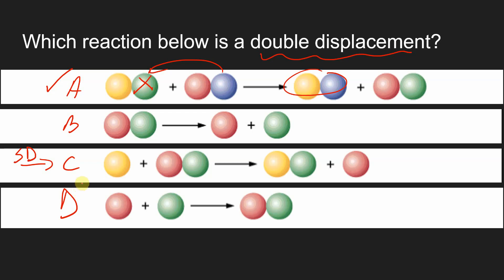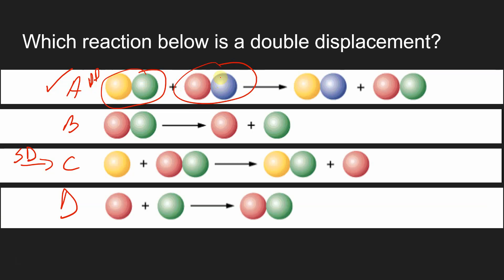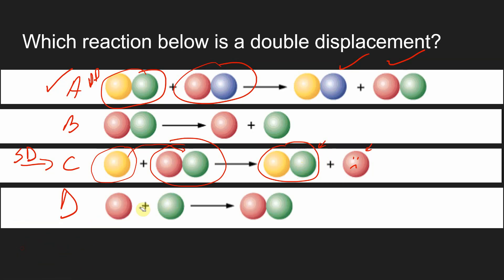Look at the difference between single and double displacement. I find single displacement sadder than the other reactions. In double displacement, two couples come to the dance and swap dates — everybody goes home happy. But in single displacement, one person comes alone, steals the date of another, and the other goes home sad and alone. So in this reaction, we're going to have some element all alone at the end, and a compound to figure out.